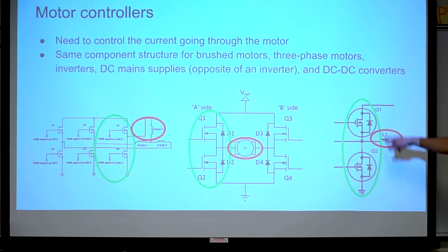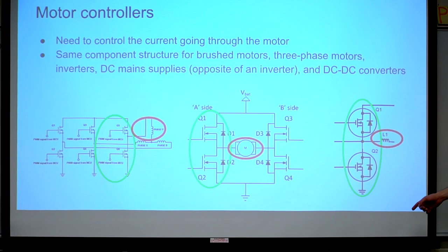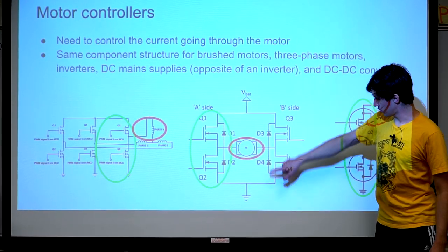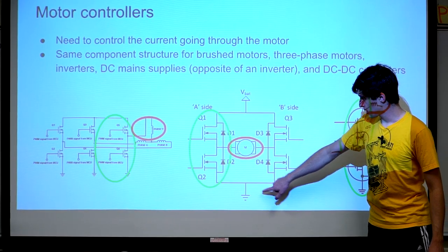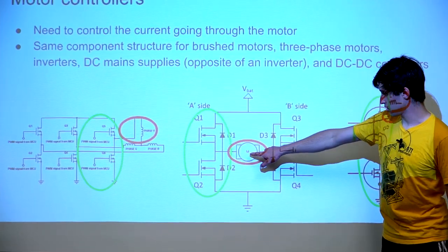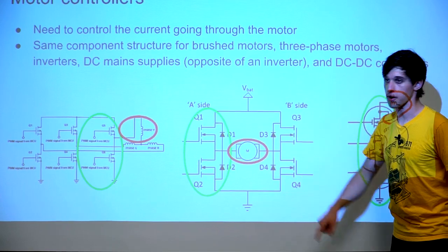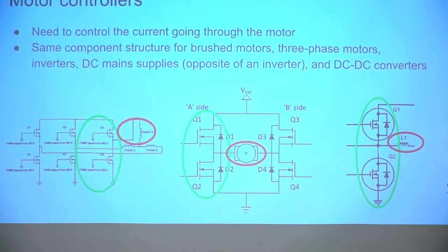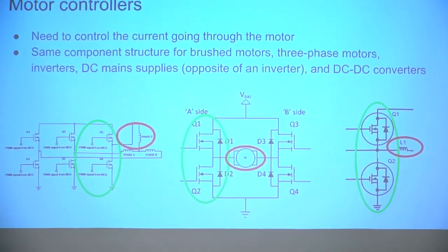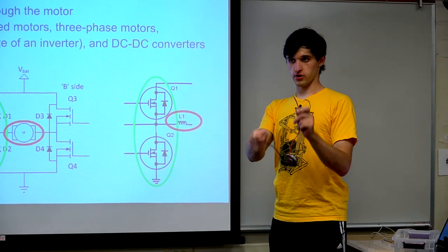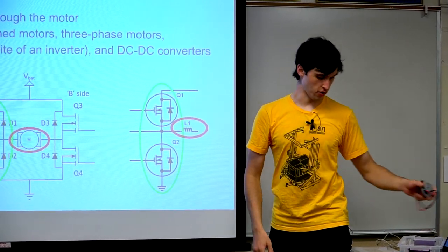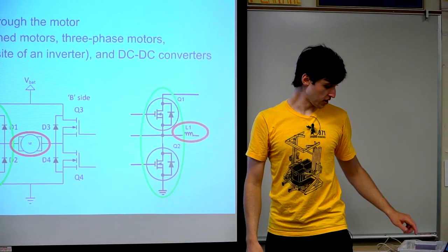A half bridge can connect each side of the motor either to power or to ground. You have your two wires coming out of your motor — hook them up one way to the battery and the motor spins one direction; hook them up the other way and it spins the other direction. Or you can switch back and forth to make it spin with less force at any given speed.